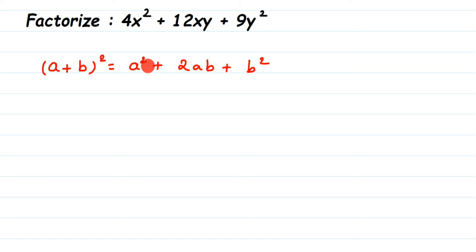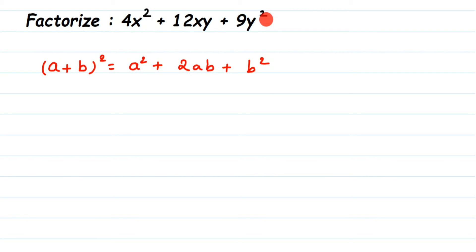To identify that we use this identity, the first term and last term should be perfect squares. We have x² — x is squared, and 4 is the square of 2, so 4x² is a perfect square. What about 9? Yes, 9 is the square of 3. So 4 and 9 are squares of 2 and 3, and both x and y are already squared, which means we can apply the first identity. We just need to cross-check the middle term.